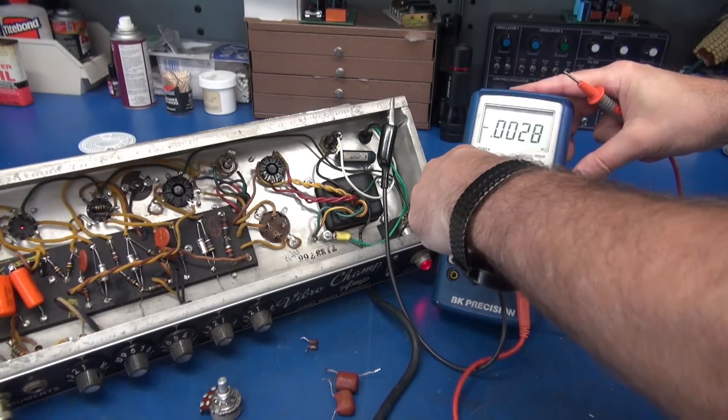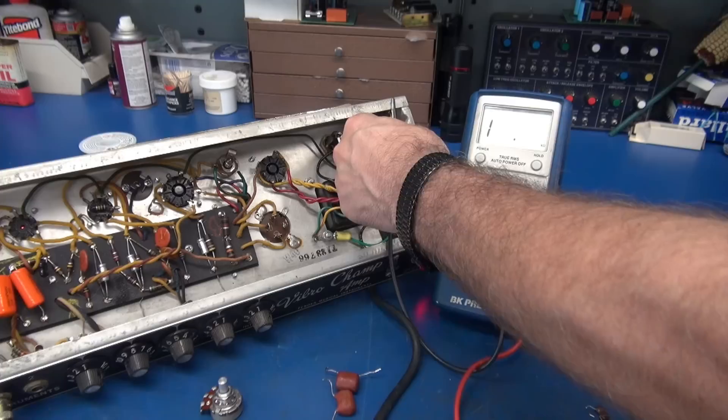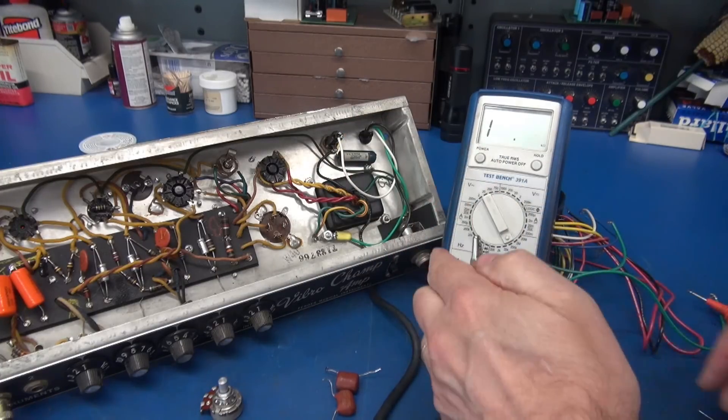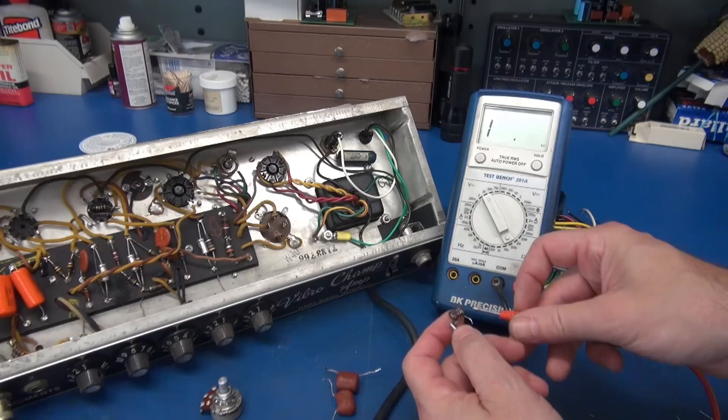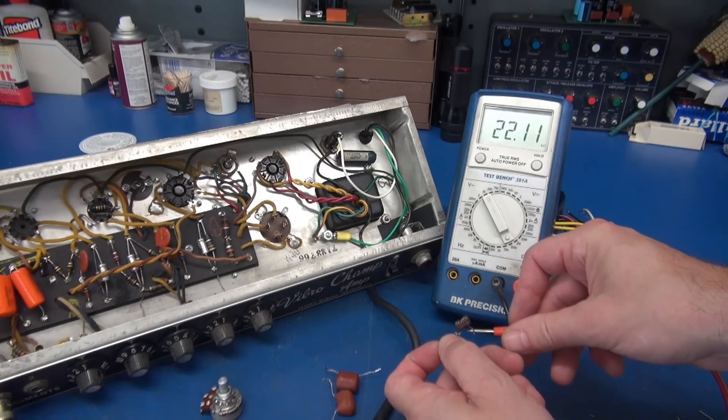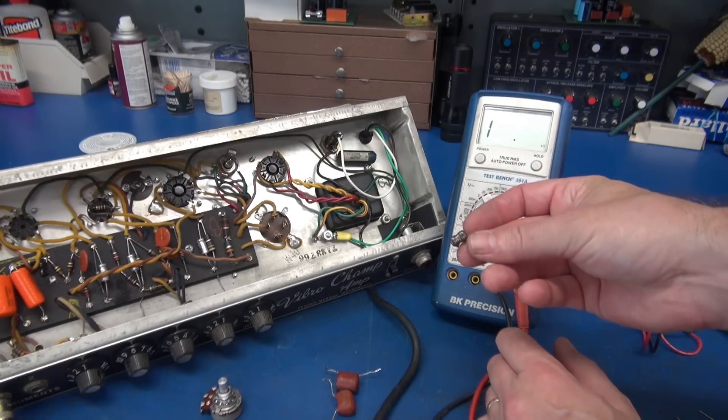Let's for the fun of it let's see if we can ohm out that cap. Go to 200k. Shut that amp off. Let's see what we have. Look at there, 22k. It's not a cap anymore, it's a resistor.